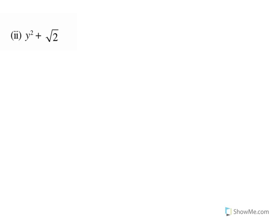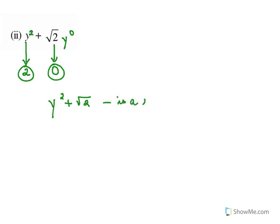Now let's check if y² + √2 is a polynomial. The power of y² is 2, and √2 is √2 times y raised to 0, so the power is 0. 2 is not a fraction nor is it negative; 0 is not a fraction nor is it negative. That means y² + √2 is a polynomial.